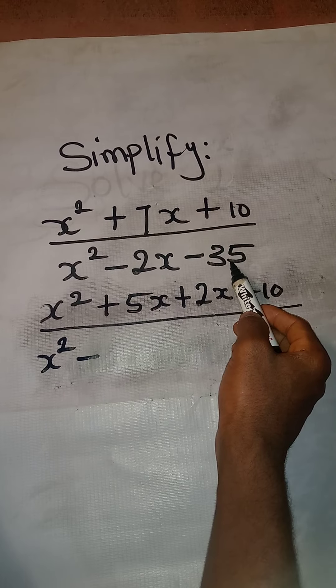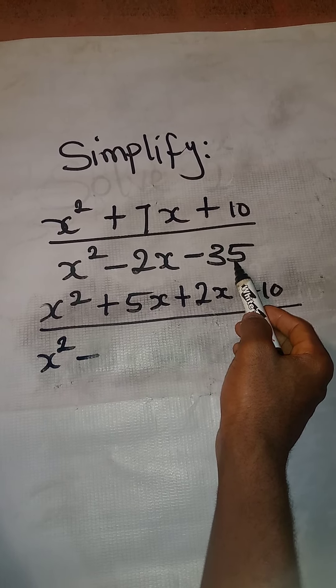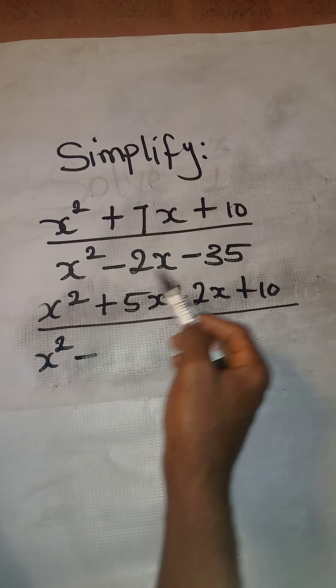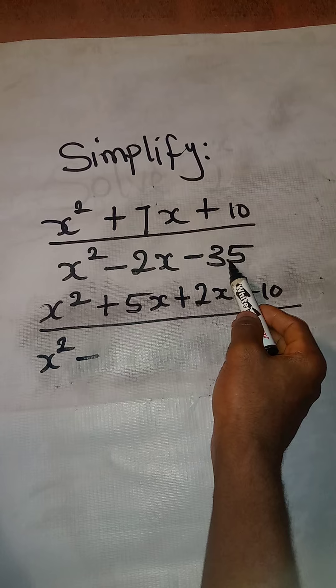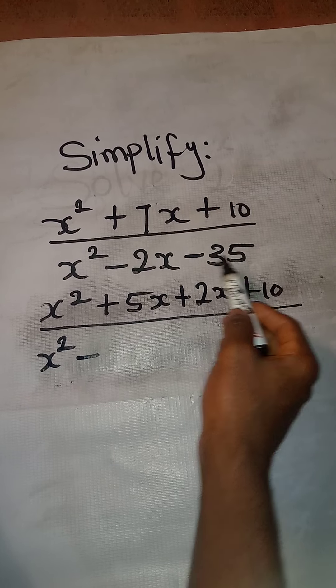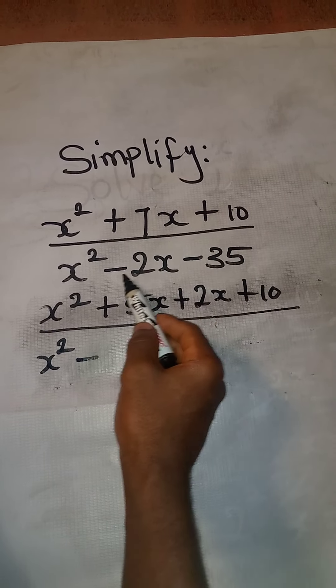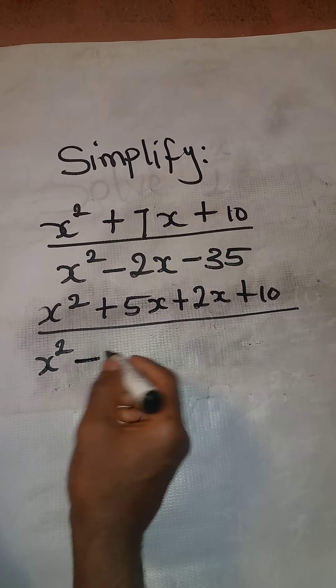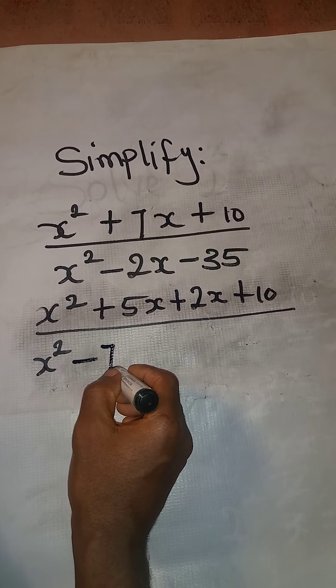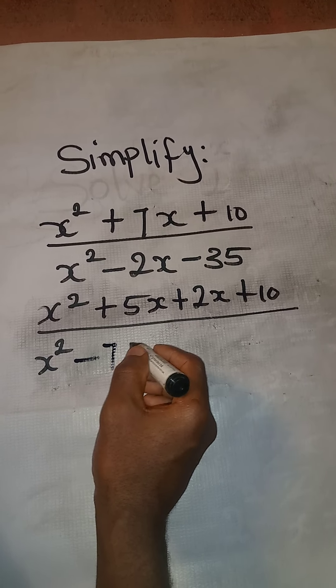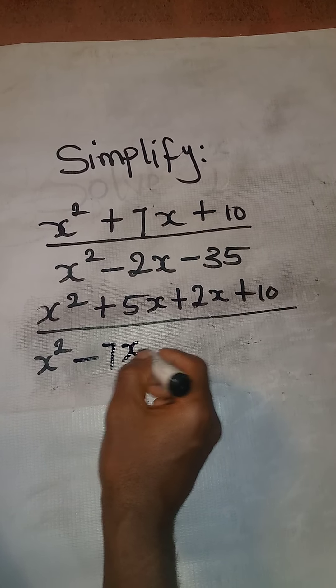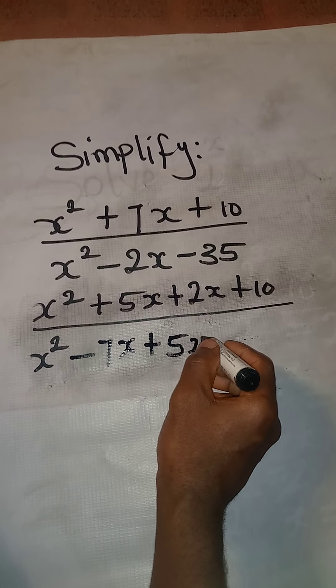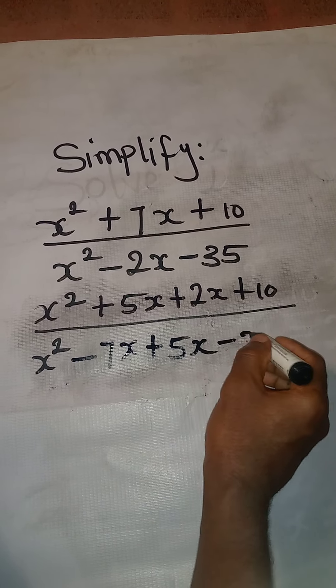You will multiply to have minus 35 and then you add them to have minus 2. Two numbers you will multiply to have minus 35 and then you will add them to have minus 2. The numbers will be minus 7 and 5. So we are going to have minus 7x then plus 5x minus 35.